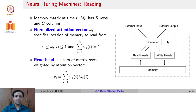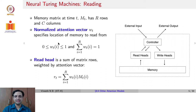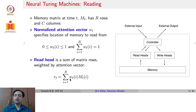Let us look at these components in more detail. You have a memory matrix at time t given as Mt, which has R rows and C columns. The normalized attention vector used to read from memory is given by a set of weights Wt(i), where the weights add up to 1 and each lies between 0 and 1. The read head is a weighted sum of the matrix rows: if each row of the memory was Mt(i), you have a corresponding weight for each row given by an attention mechanism, and a weighted sum of all memory rows becomes what the read head gets from memory.